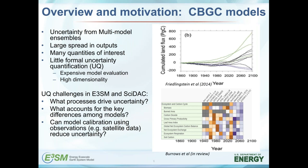Some uncertainty quantification challenges we're trying to address through E3SM and CIDAC include understanding what processes drive uncertainty in the land model and what accounts for key differences among models. We also ask whether we can do formal model calibration using observations or benchmarks from remote sensing to reduce both parameter, structural, and prediction uncertainty in these models.